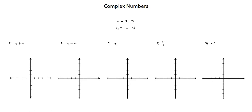We're given two complex numbers, Z1 and Z2. Z1 equals 3 plus 2i, and Z2 equals negative 1 plus 4i. We'll look at five scenarios of operations with these complex numbers and evaluate the geometrical representation for each operation in an Argand diagram.